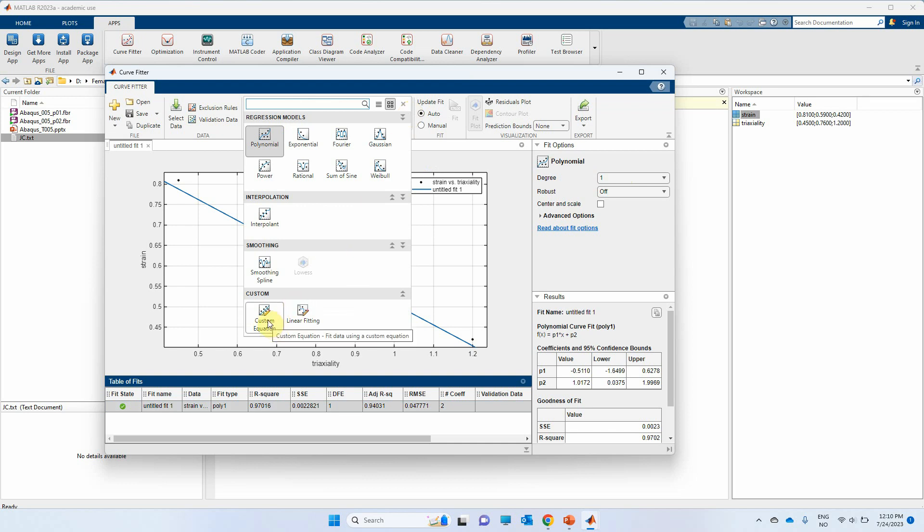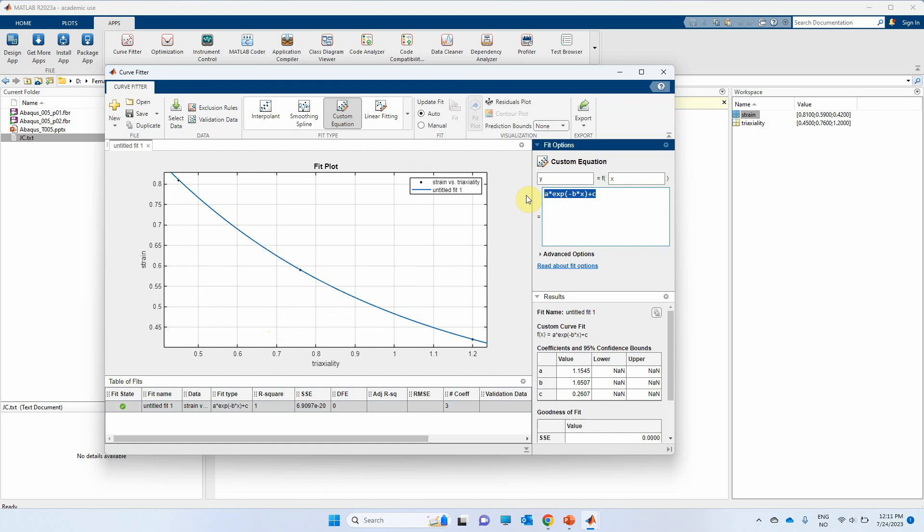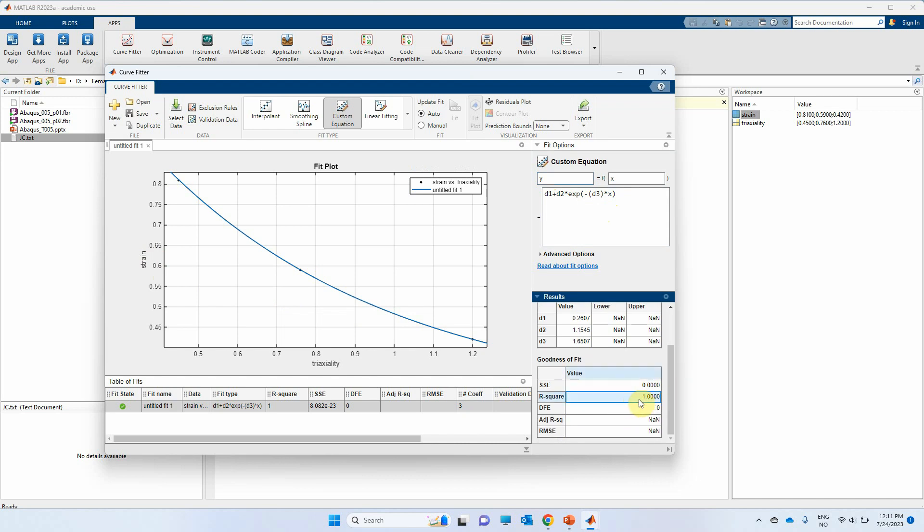And I will just change everything similar to the Johnson-Cook relationship that we have: d1 + d2 * exp(-d3 * x), and here x is triaxiality and y is fracture strain. As you can see, this is the fitted curve and here we can control the accuracy. This is very accurate because, as I mentioned before, these data are not realistic, but you might get some error here. And then you have the values for d1, d2, and d3 calibrated, and you can use it, for example in Abaqus, to implement Johnson-Cook model.